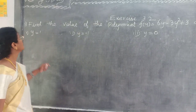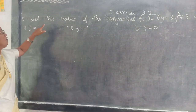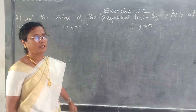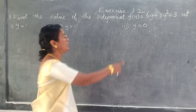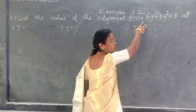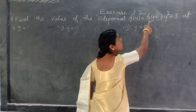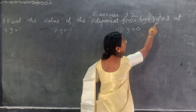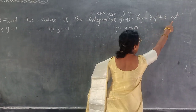Good morning. Find the value of the polynomial. f of y equal to 6y minus 3y squared plus 3.